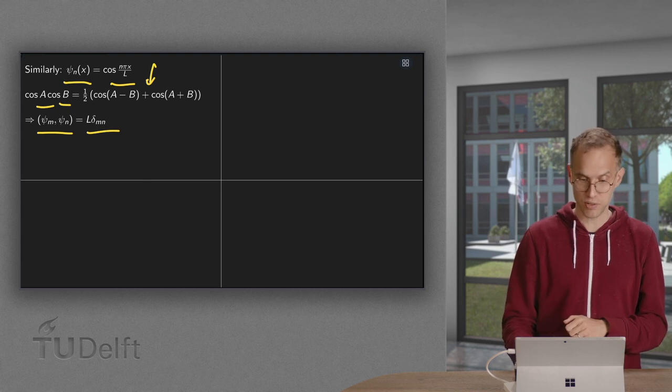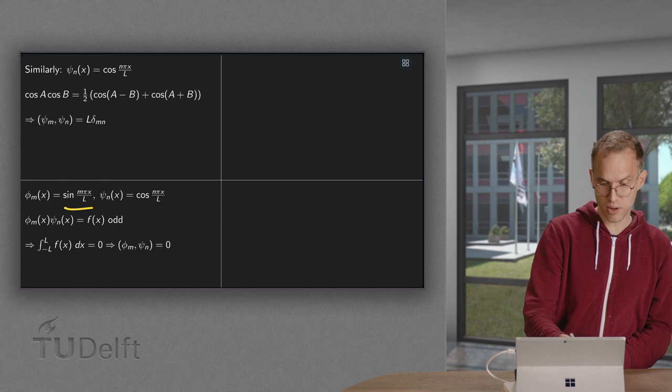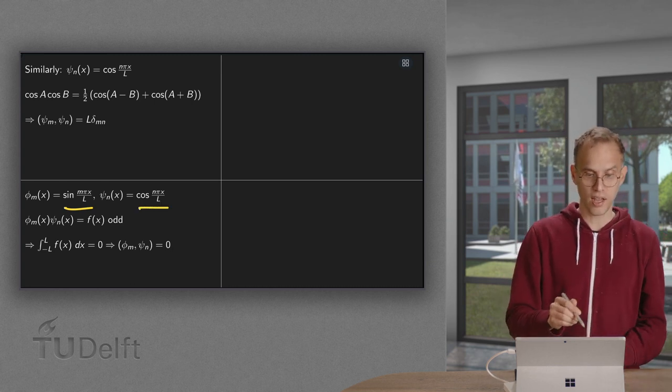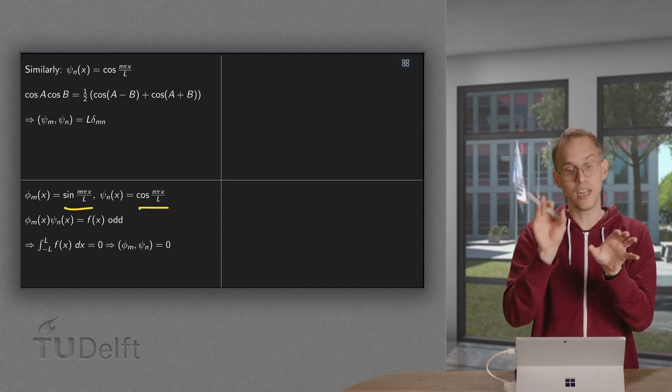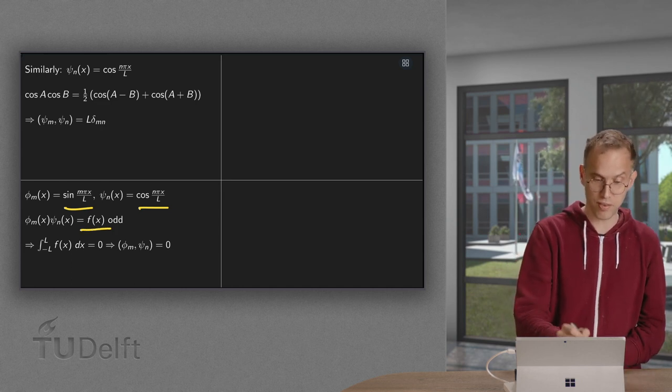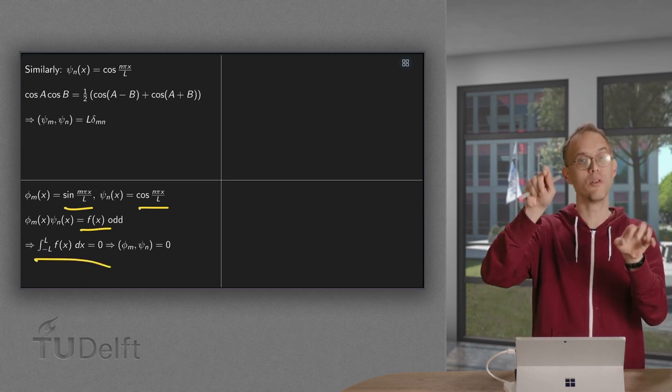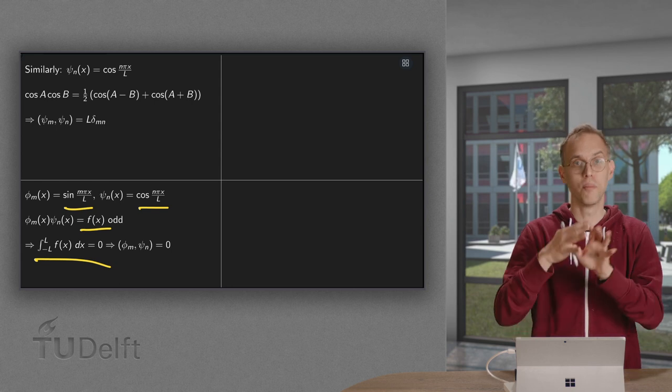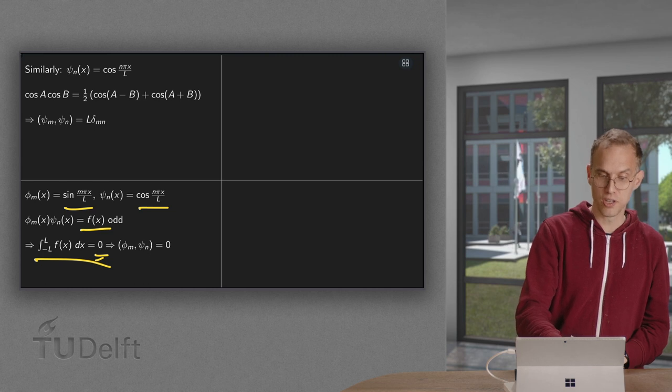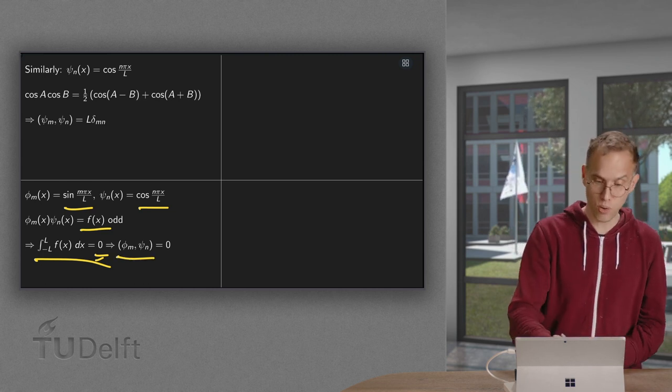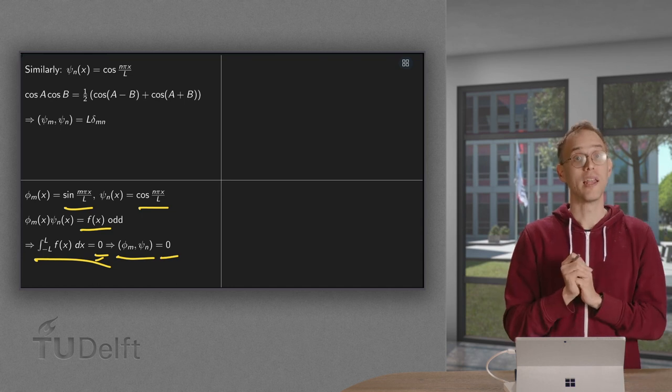Now, what happens if you're going to mix them up? We have a sine and a cosine. If we now take the product, we get a product of a sine and a cosine. A product of an odd and an even function gives us f(x) odd. However, if you integrate an odd function from minus l to l, you will always get zero, no matter which l you are taking. We know that this integral is always zero. So phi_m comma psi_n is always equal to zero. If you mix them, no problem. The inner product is zero.